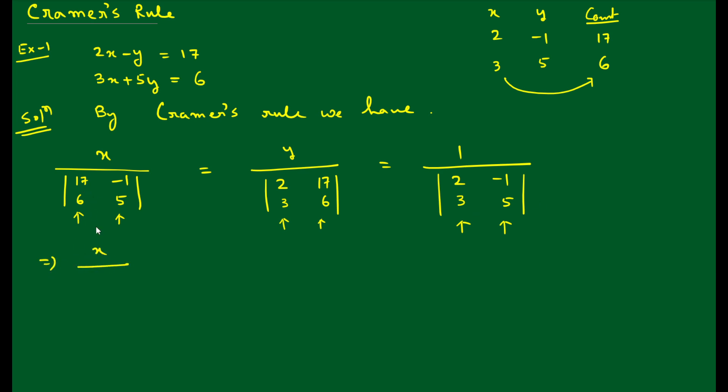Now we break the determinant. It's 17 into 5, which is 85, minus 6 into -1 which is -6, giving us 91. This equals y divided by 12 minus 51 which is -39. Finally, it is 1 divided by 10 minus (-3), which equals 13. So this implies x divided by 91 equals y divided by -39 equals 1 divided by 13.